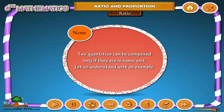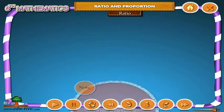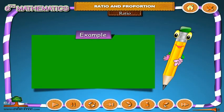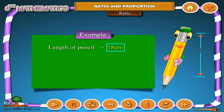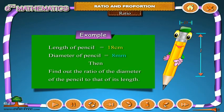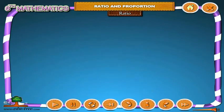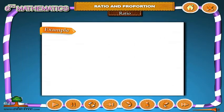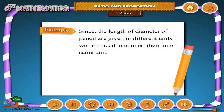Students, please note: two quantities can be compared only if they are in the same unit. Let us understand with an example. The length of a pencil is 80 centimeters and the diameter of the pencil is 8 millimeters. Find the ratio of the diameter of the pencil to that of its length.